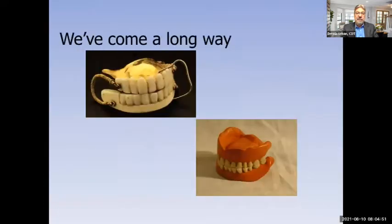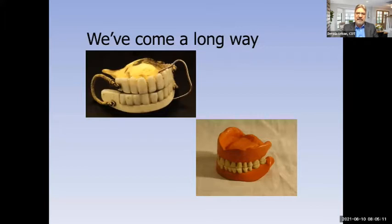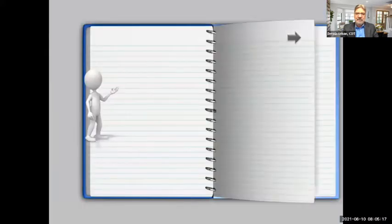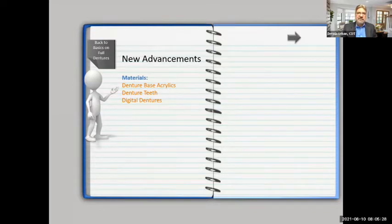We've come a long way with denture technology. In the top left corner, those are George Washington's dentures — made of lead, bone, and other materials. On the lower picture, you'll see a vulcanite denture made in the forties and fifties with hardened rubber material. It wasn't very aesthetic, but that's what they had. We've come a long way with advancements in denture-base acrylics, denture teeth, and digital dentures.